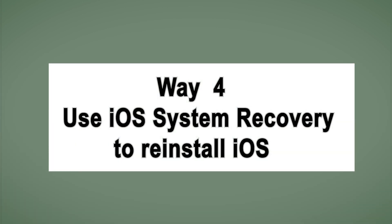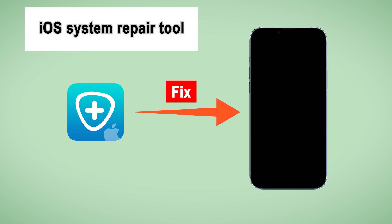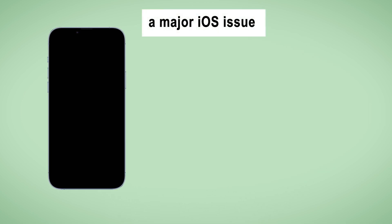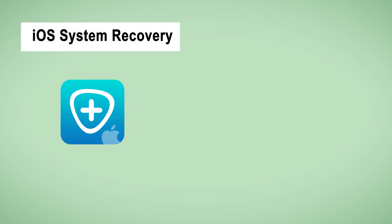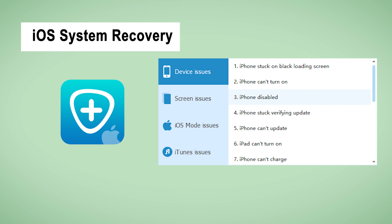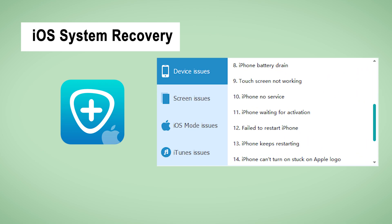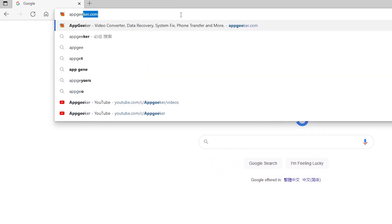If you've already tried those methods and iPhone 12 is still completely blacked out with nothing happening — it's still dead — go ahead and try a smart iOS system repair tool to fix the issue. In many cases, a major iOS issue is the reason behind the black screen of death on iPhone 12. The device all of a sudden gets unresponsive and blacks out, sometimes displaying the Apple logo or a spinning gear on the black screen. What I'm going to use is AppGeeker's iOS System Recovery, which can fix more than 150 iOS problems and reinstall the software without erasing any data. Now we start using it to light up iPhone 12's screen.